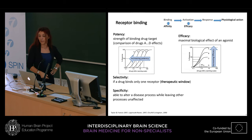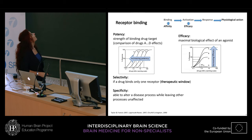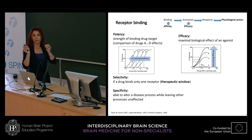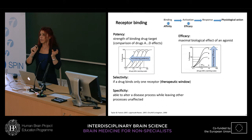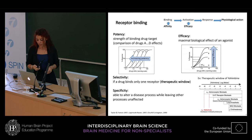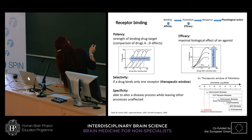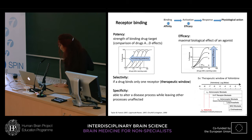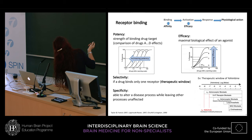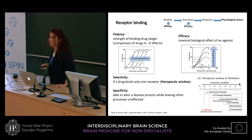Selectivity refers to whether a drug binds to one receptor or several receptors, which relates to the therapeutic window. Specificity is when a drug alters one disease process without altering others. For example, yohimbine is an alkaloid that at 10–100 nanomolar is selective for alpha-2 adrenoceptors and blocks them, but at higher concentrations it loses selectivity, starts binding to other receptors, and also loses specificity — producing opposite effects by binding to alpha-1 adrenoceptors.